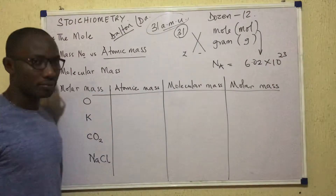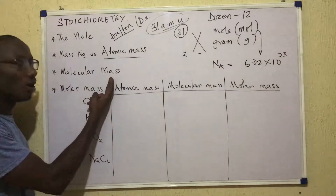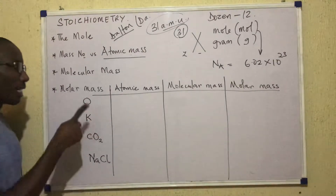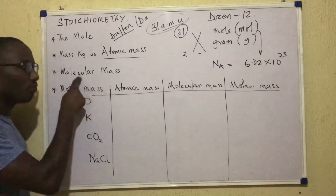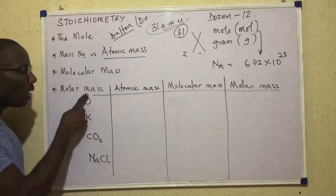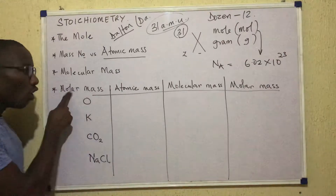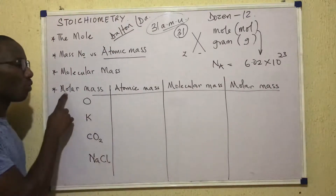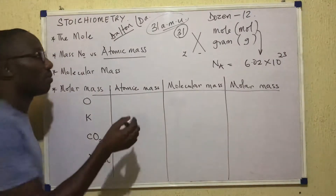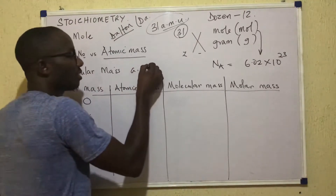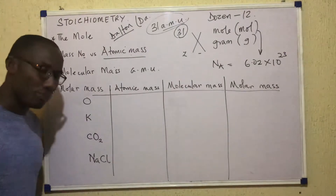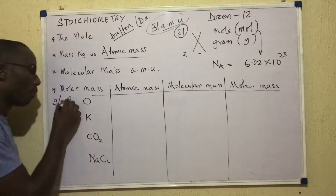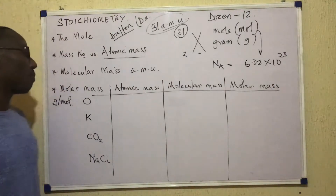Molecular mass simply means the mass of a molecule. To have molecular mass, the substance being considered must be a molecule — an atom cannot have molecular mass. Then molar mass means the mass of one mole. The mass of one mole of anything is what we refer to as molar mass. Atomic mass and molecular mass share units — both are measured in AMU — whereas molar mass has its own unit of gram per mole.